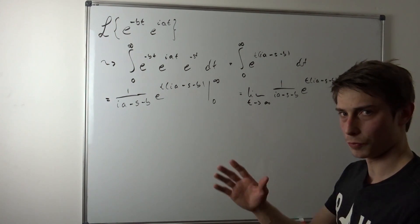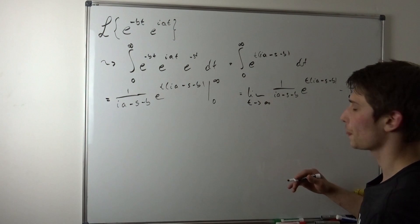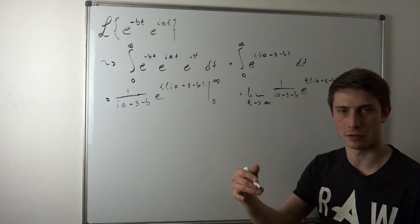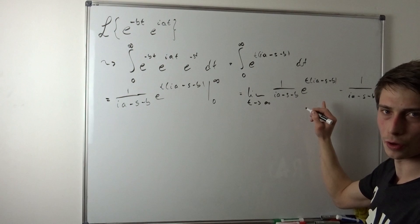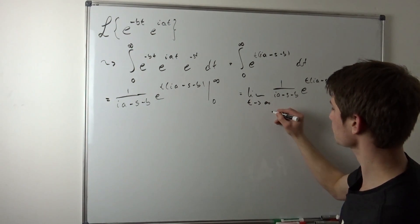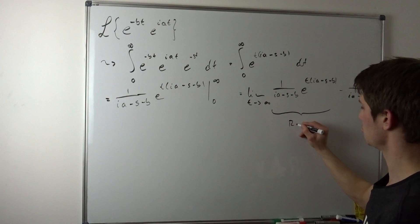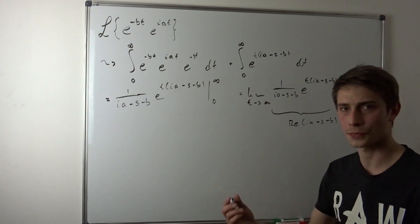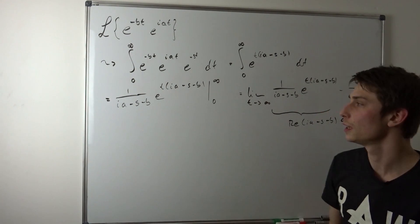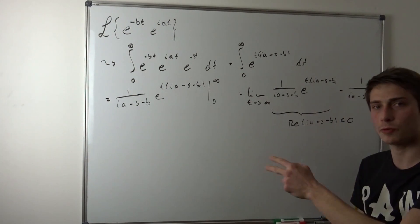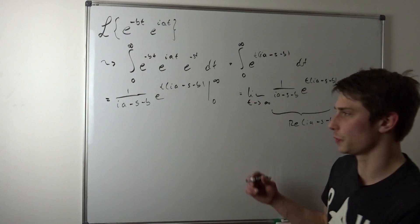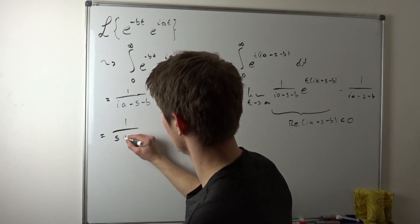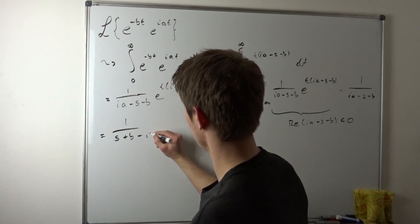Now we have to find the condition for convergence. We want this exponent to become negative, so it becomes 1 over infinity, which is just zero. In order for this whole thing to converge, our condition is that the real part of (ia minus s minus b) is less than zero — that's how we get the negative exponent. What we end up with is just this term, and we distribute the minus in to get: 1 over (s plus b minus i times a).